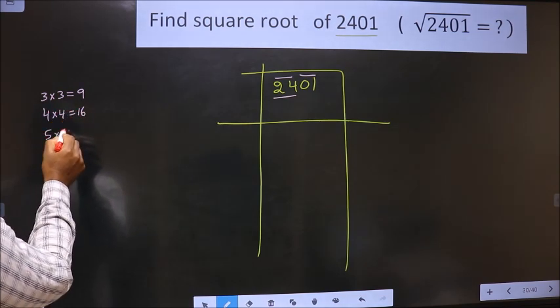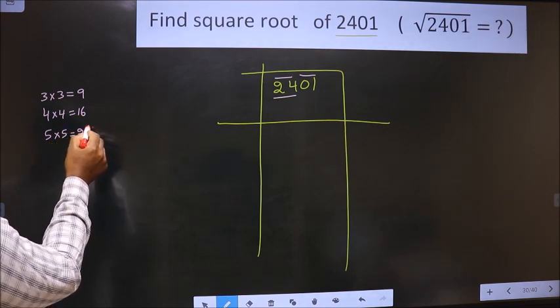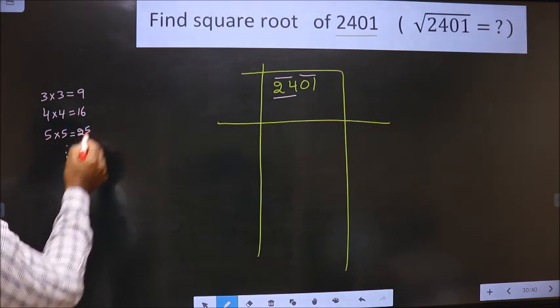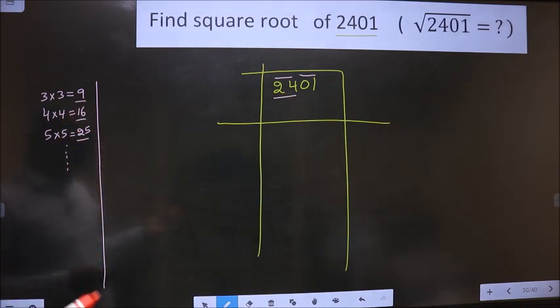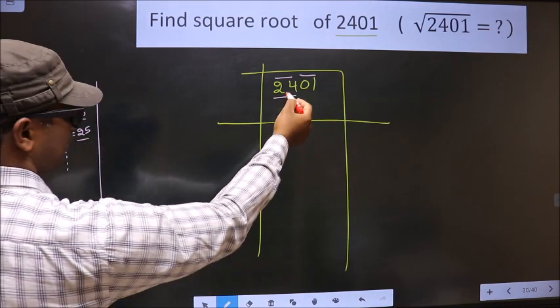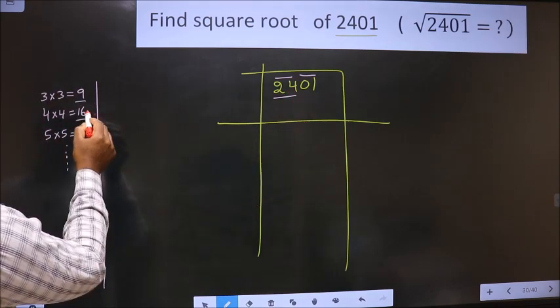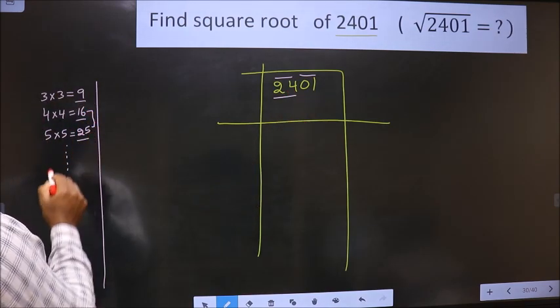5 into 5, 25. And so on. These numbers are called square numbers. Here we have 24. It lies between these two numbers.